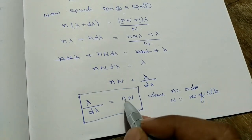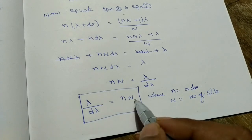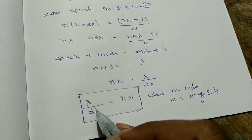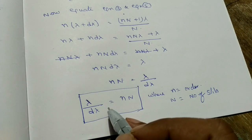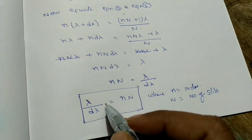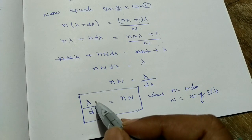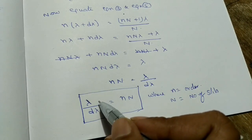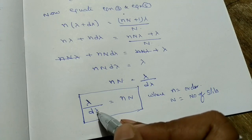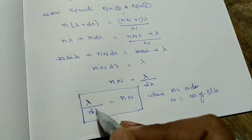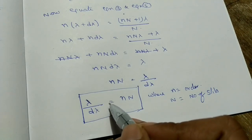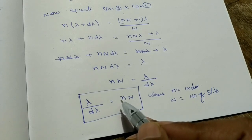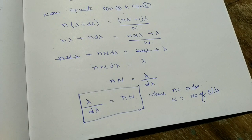By multiplying the order and the number of slits, we can get the resolving power. Resolving power has no units, because lambda is in angstroms and d-lambda is also in angstroms, so the units cancel. Resolving power = n × N.